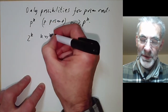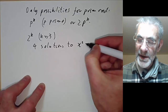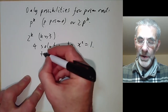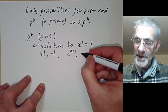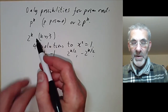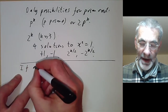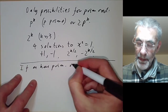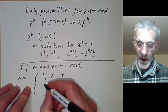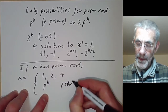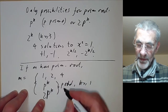There is still one more obstruction: for 2^k with k ≥ 3, there are four solutions to x² = 1. Two are obvious — 1 and −1 — and the other two are 2^{k/2} and −2^{k/2}. So if m has a primitive root, then m must be 1, 2, 4, p^k for p odd and k ≥ 1, or 2·p^k for p odd and k ≥ 1.